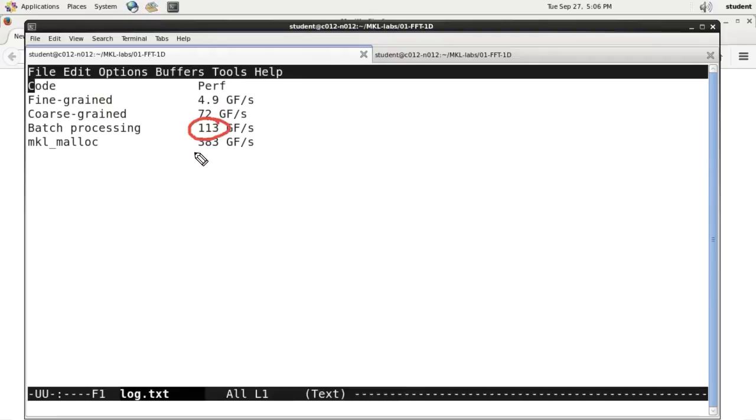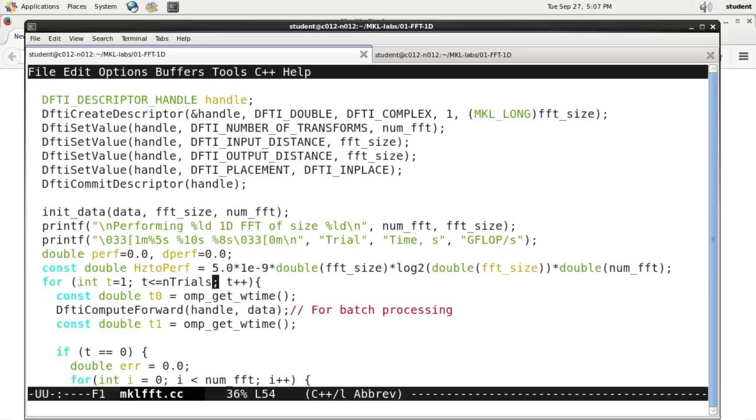By just changing the allocator, I gained more than 3x in performance. And there is an interesting detail in what happened. Turns out that MKL, behind the scenes, used the high bandwidth memory.